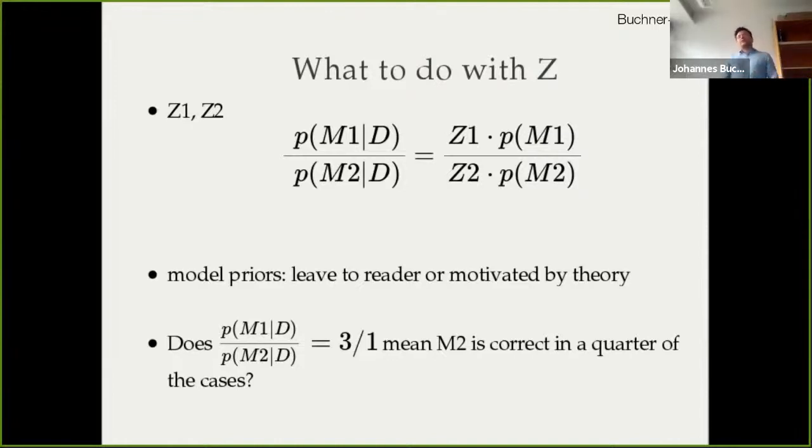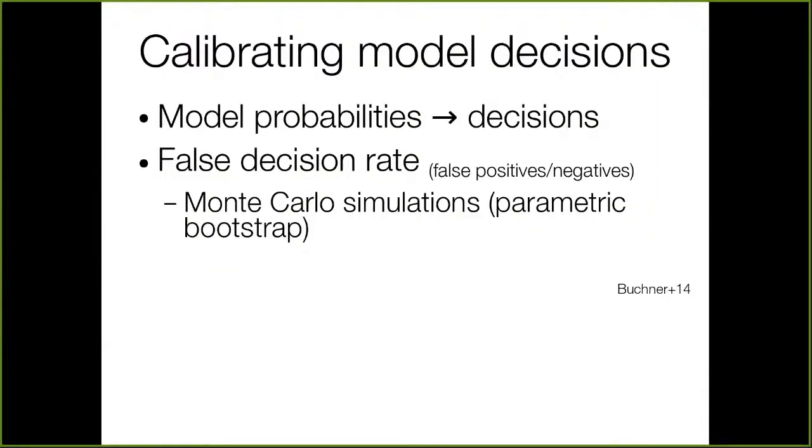You can do this integral ratio Z1 over Z2, it is the Bayes factor. If you multiply that by model prior odds ratio, you get a posterior odds ratio which tells you the probability of model one compared to the probability of model two. The drawbacks here are that you need these model priors and just because one model has a higher evidence value, it doesn't tell you the rate at which you would make a false decision.